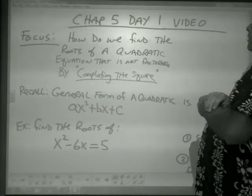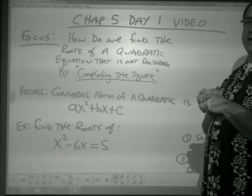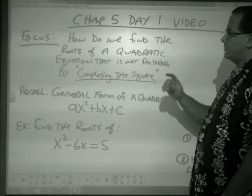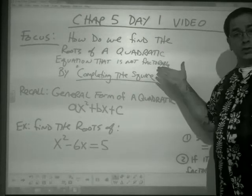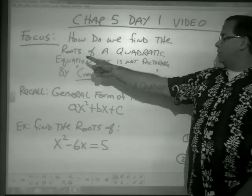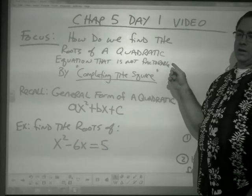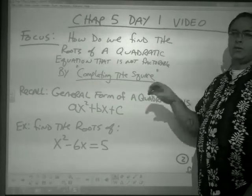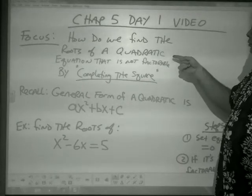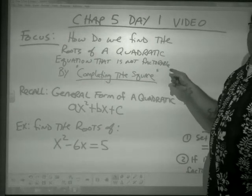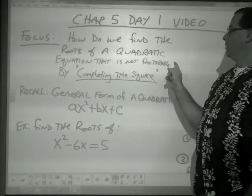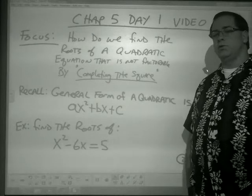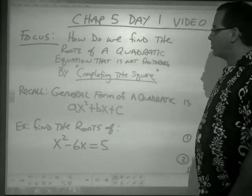Okay, chapter five day one. We're out of functions now, so what we're going to look at is back more with quadratics: how do we find the roots or solutions of a quadratic equation that is not factorable? Up until now we've factored it, set the factors each equal to zero, made our t-chart, and got two answers. But now we're going to learn a method called completing the square.